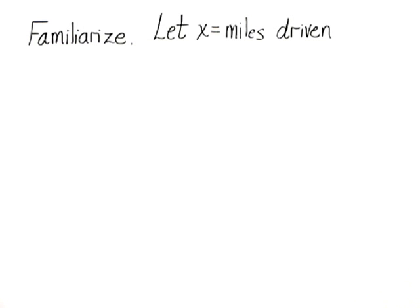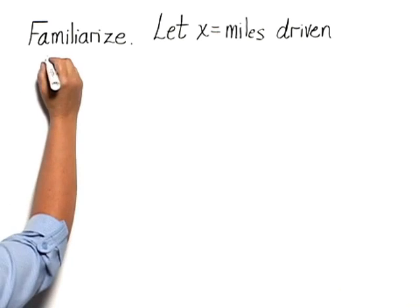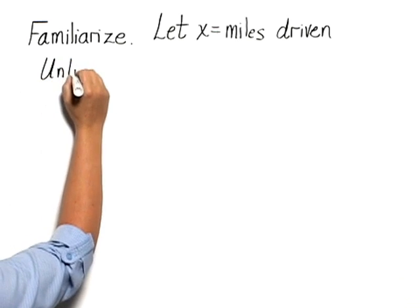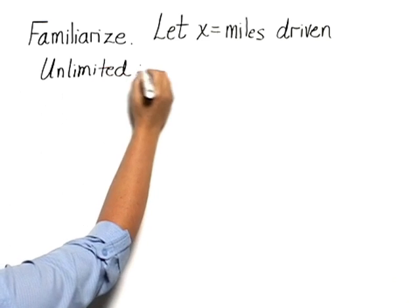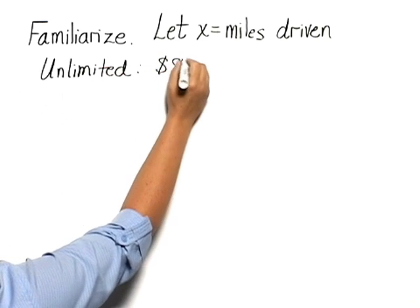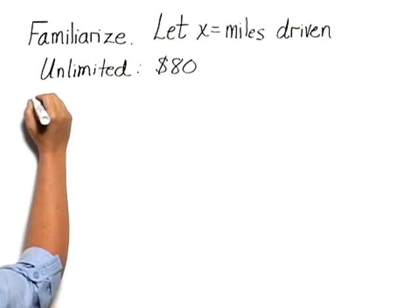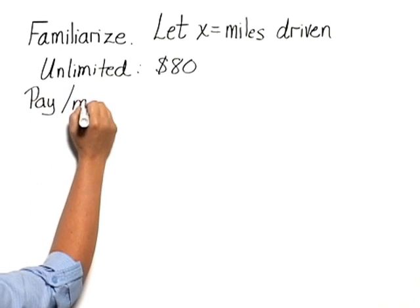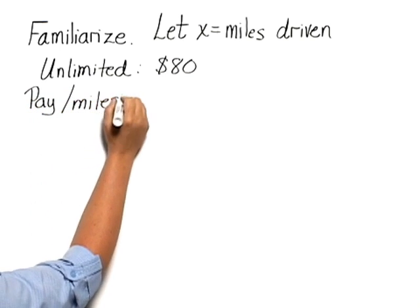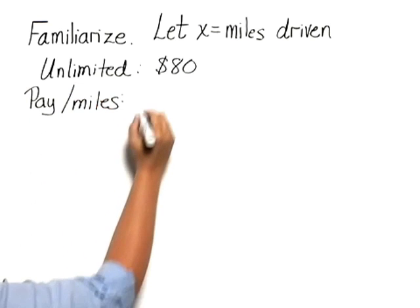Let's start by familiarizing ourselves with this situation and we'll let X equal the number of miles driven. There are two plans that Danny can choose from: the unlimited mileage plan which would simply cost her $80, or the pay for the miles plan which will cost her $45